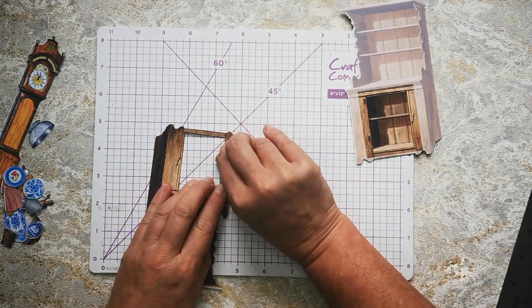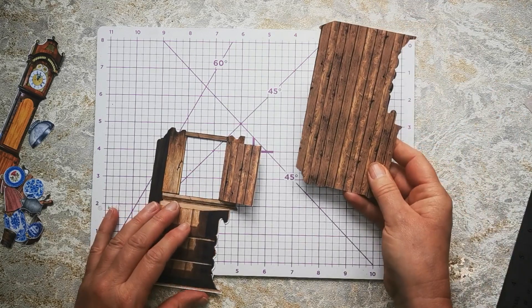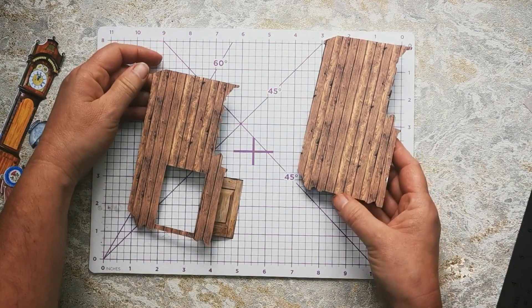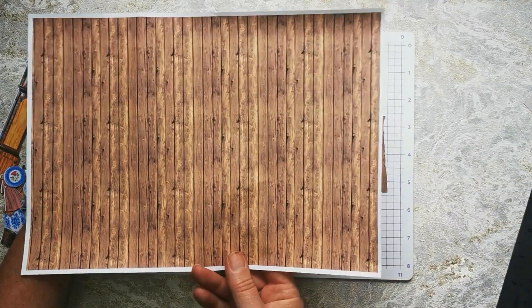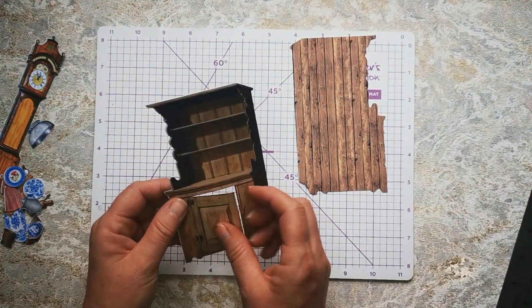This sheet, as you can see, has been reverse printed with the wooden background that comes with the kit. I've printed these onto 300 gram card.